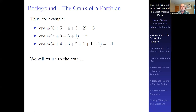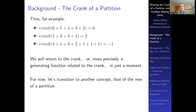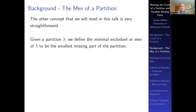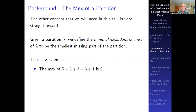Let me transition to the minimal excludant, or MEX, of a partition. The MEX of λ is simply the smallest part missing from the partition. For example, the MEX of (5,3,3,3,1) is 2 — you have a 1 but no 2. The MEX of (6,5,4,3,2) is 1, since 1 is missing. And the MEX of (4,4,3,3,2,2,1,1) is 5, since 1, 2, 3, and 4 are all present.